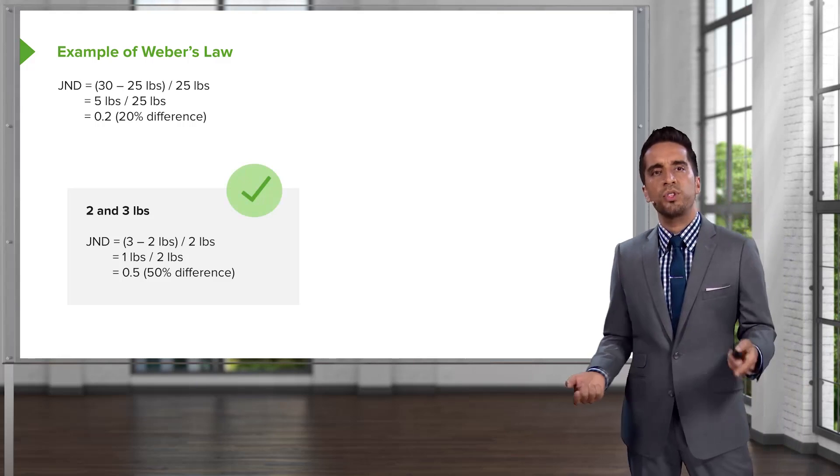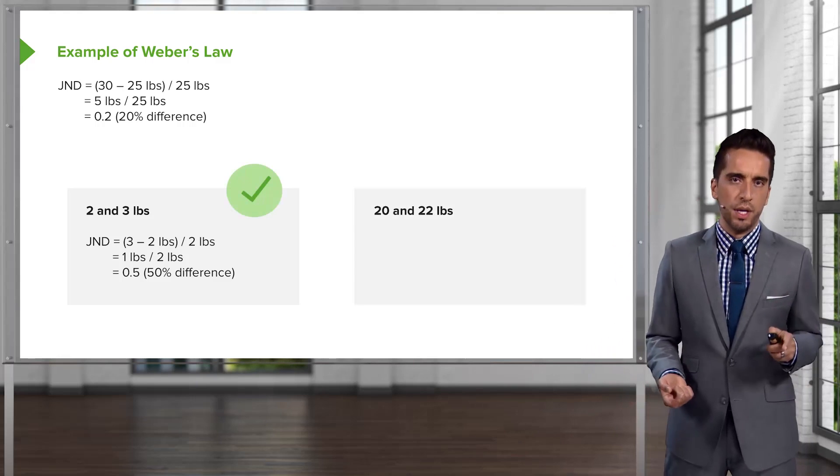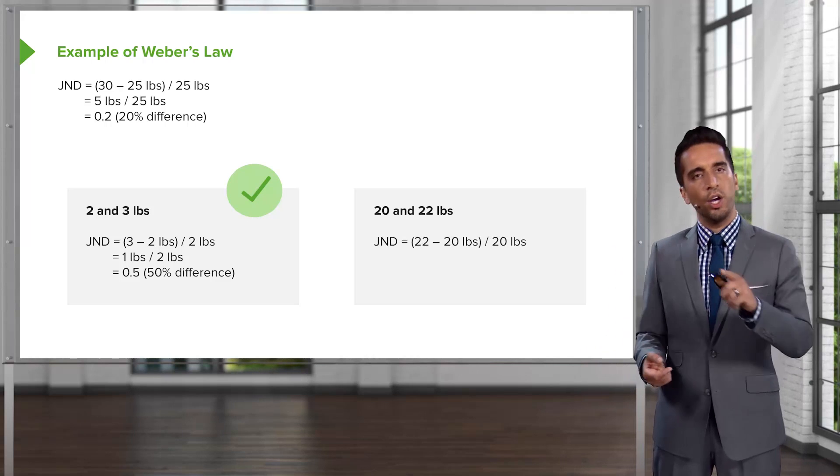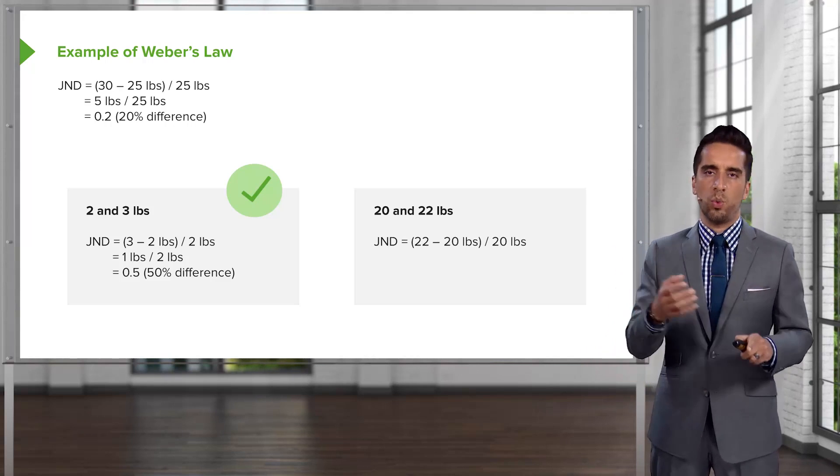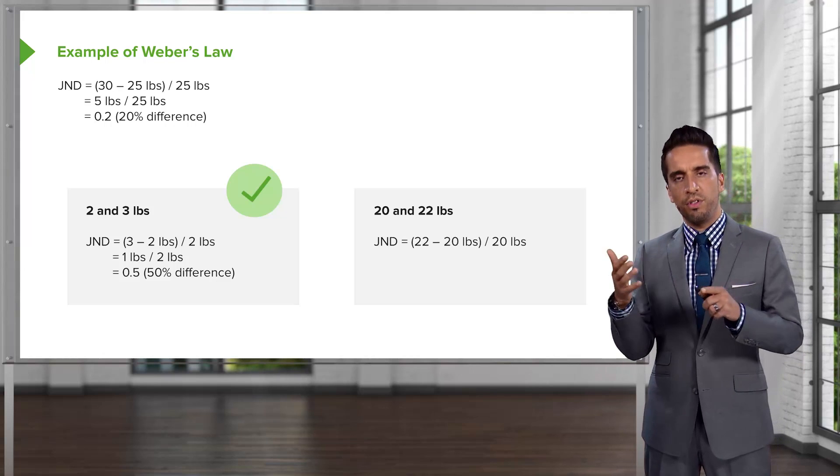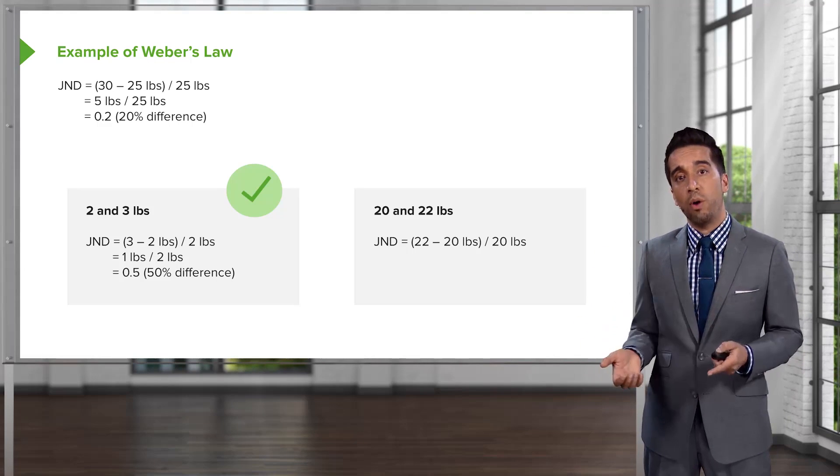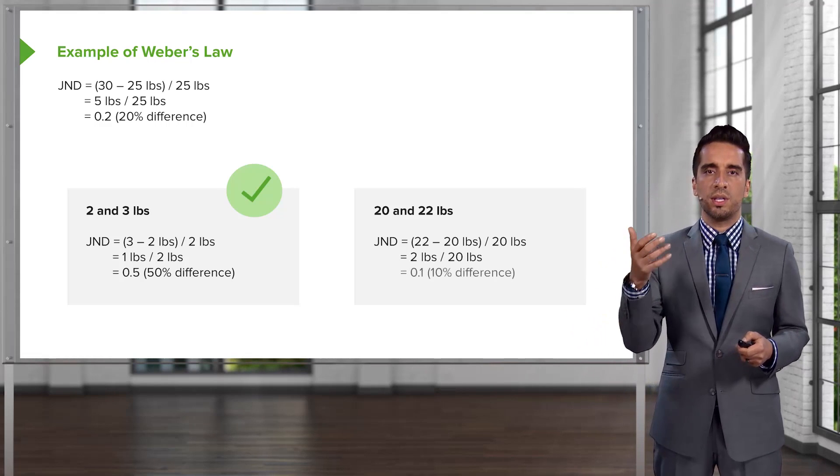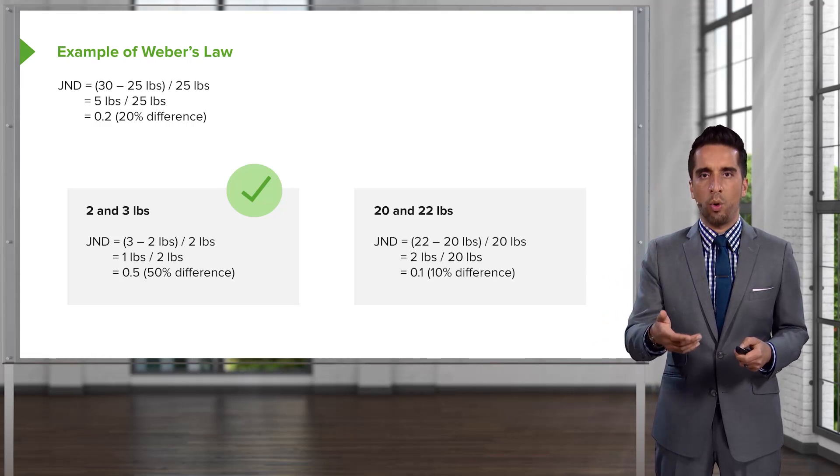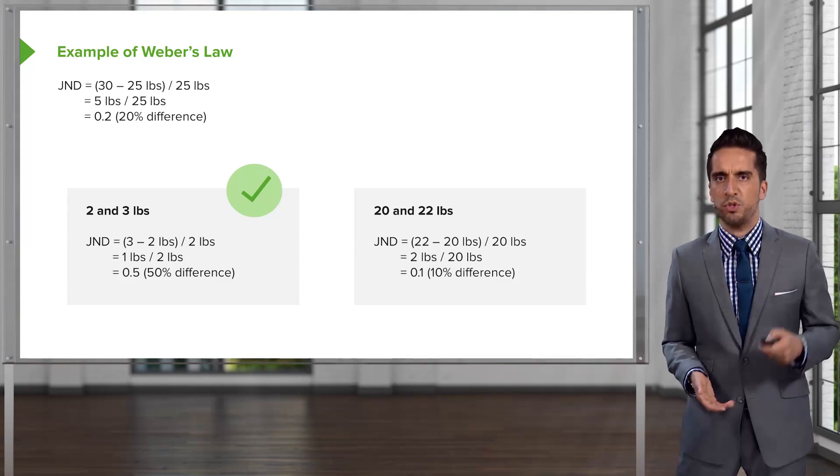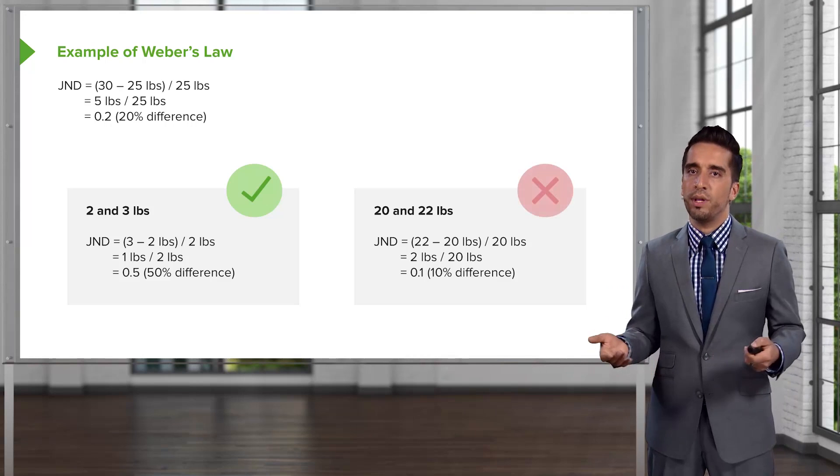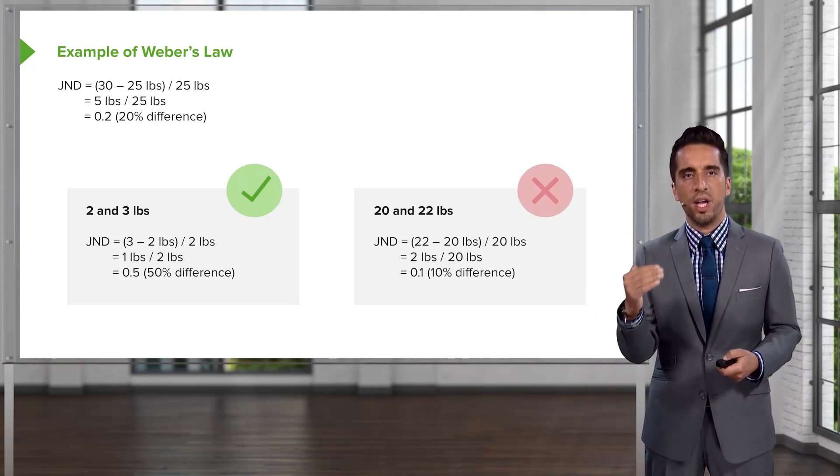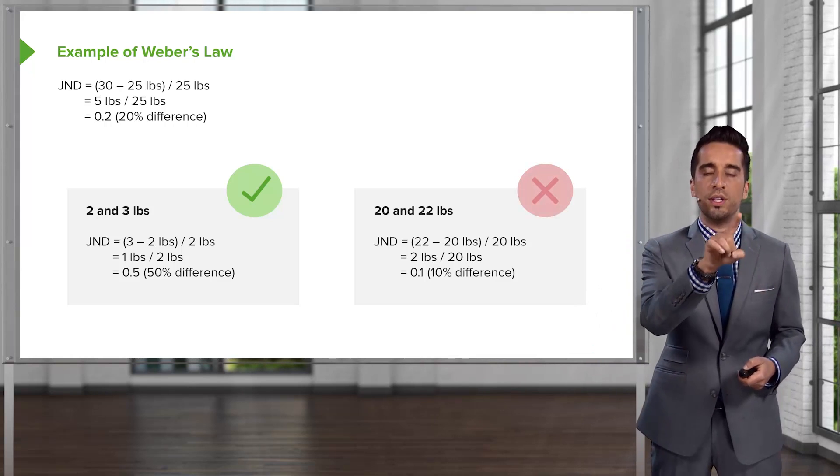Now, what was our other option? 20 versus 22 pounds. Same thing. Let's walk through this. JND, 22 pounds minus 20 pounds over the original stimulus, which was 20 pounds. So, that gives us 2 over 20, right? And that gives us 0.1 or a 10% difference. Will Timmy be able to tell the difference between 20 and 22? Well, the answer is no, because it's less than the JND that we said Timmy can detect, which was 0.2.